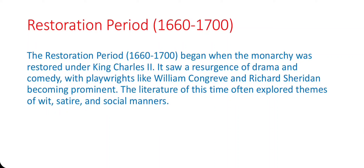Following the Puritan Age, we enter the Restoration period from 1660 to 1700. With the restoration of the monarchy, literature began to reflect the changing social and political landscape. Theaters reopened and comedy became the dominant genre. Writers like John Dryden and William Congreve emerged, with Dryden's Absalom and Achitophel standing out as a significant work of political satire.